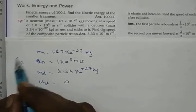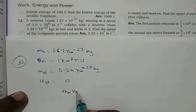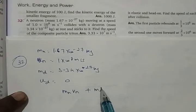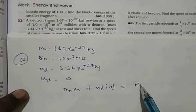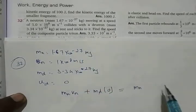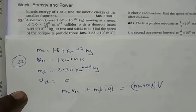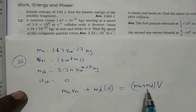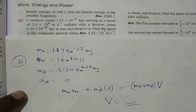I am going to ask you to do this one yourself. The setup is: Mn·Vn + Md·0 = (Mn + Md)·V. The deuteron is at rest, so its initial momentum is zero. After collision both masses stick together and move with velocity V. Please substitute the values and find V yourself.